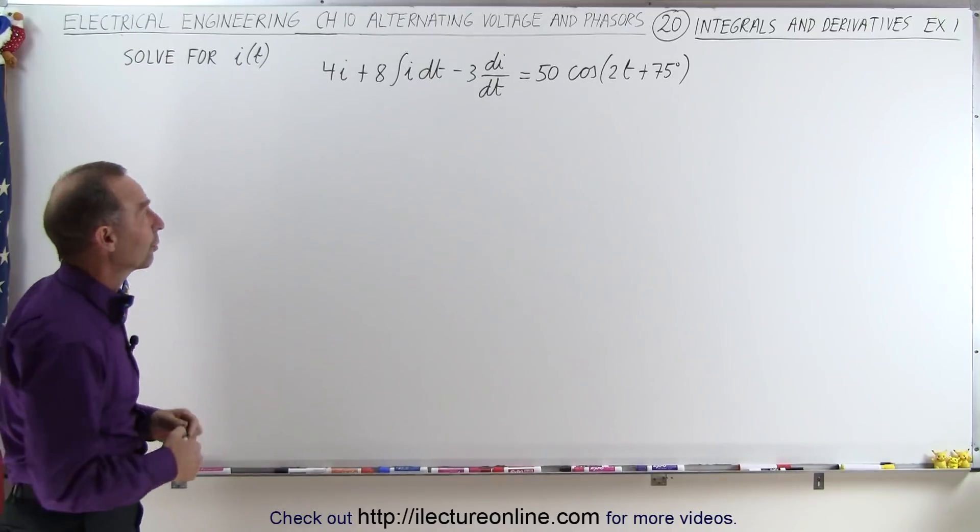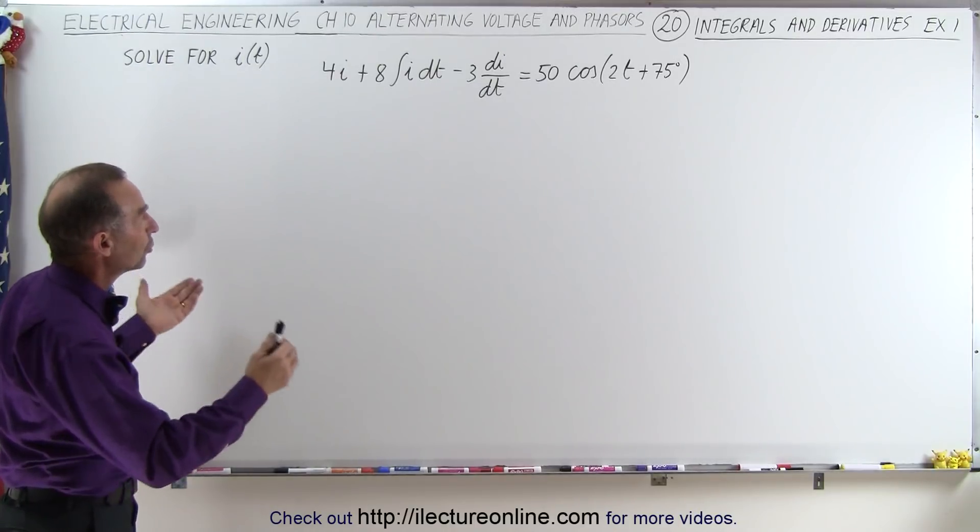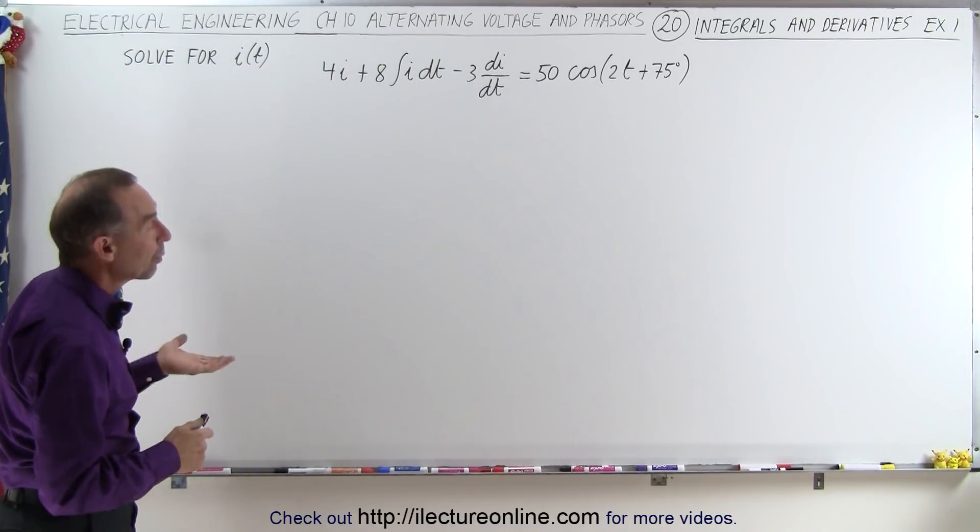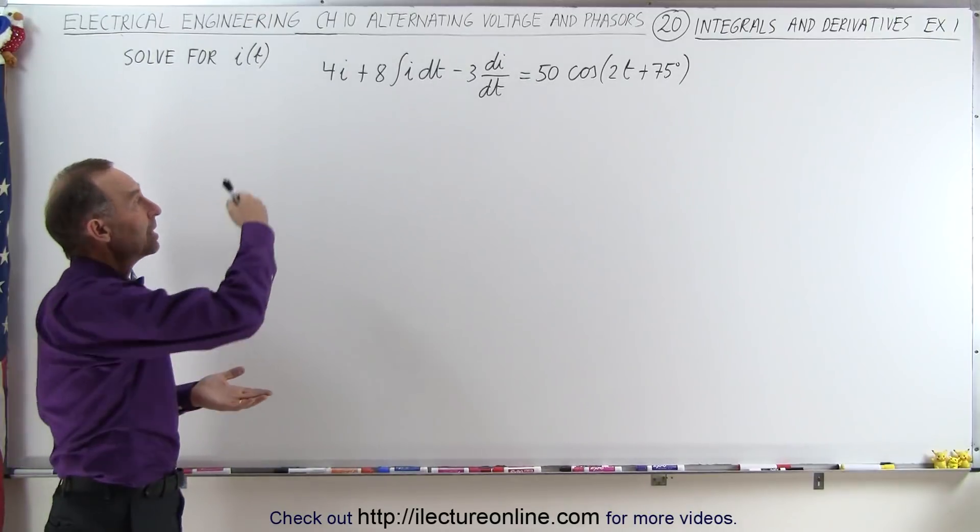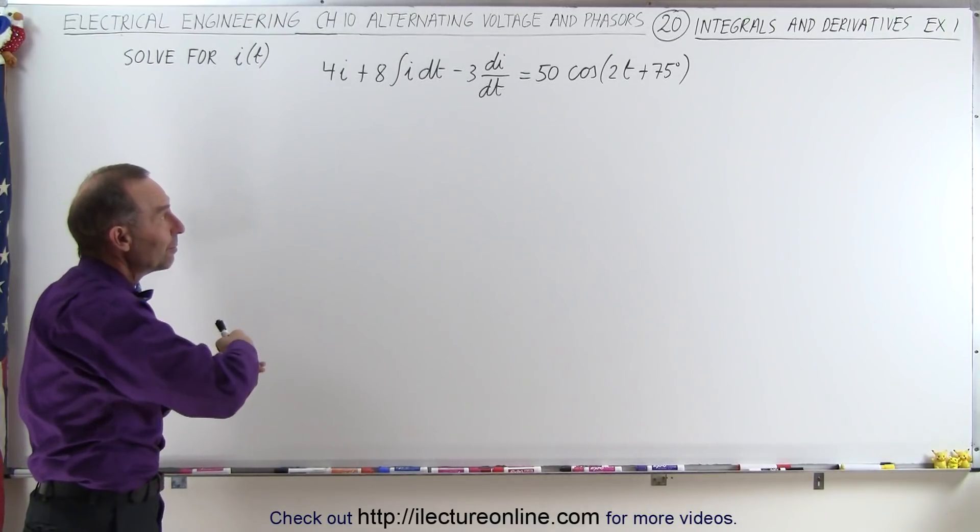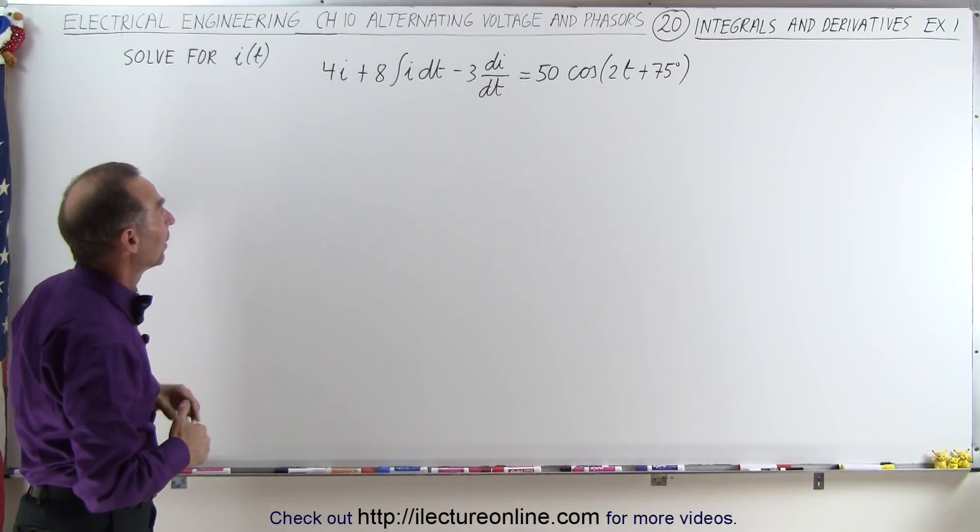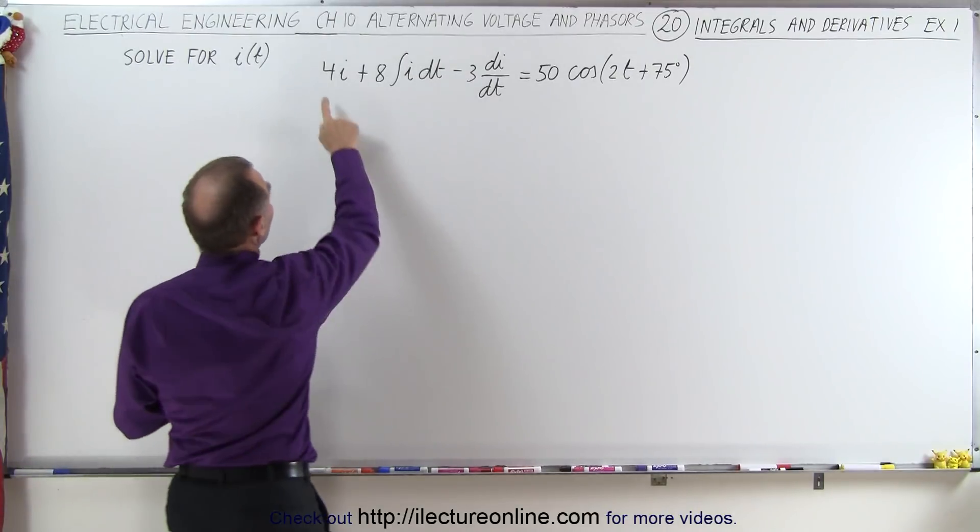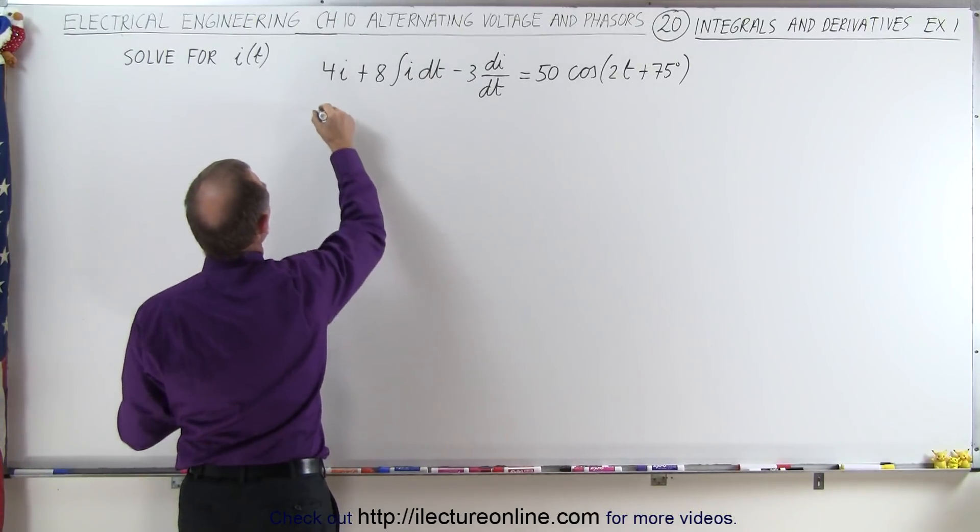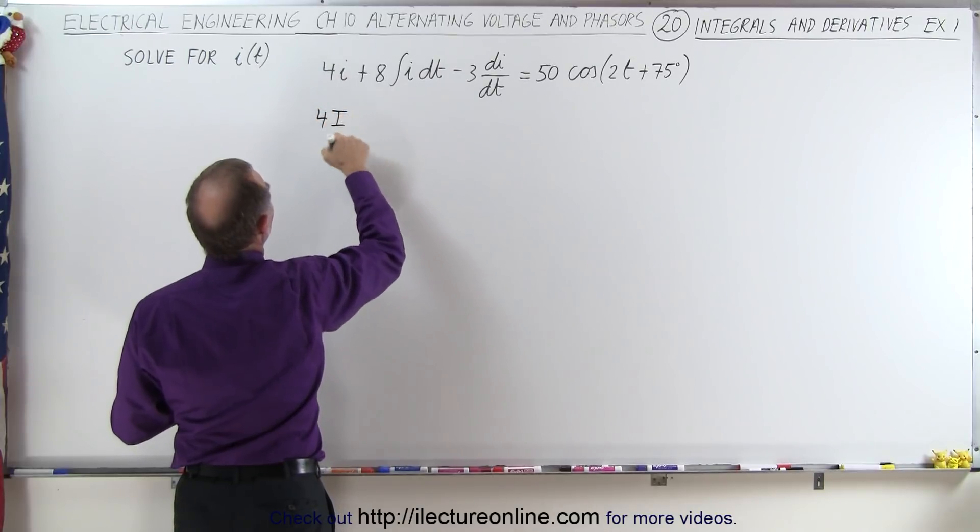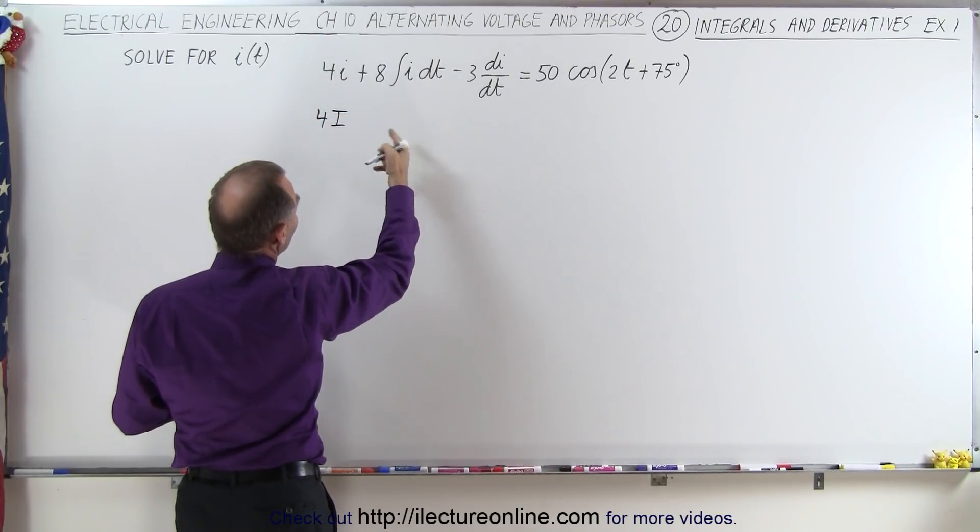So you can see this is a very realistic representation of what you might want to do with this kind of thing. And what we want to do here is we want to convert the equation from the time domain to the phasor domain or to the frequency domain. So what that then looks like is that 4i then becomes 4 times the magnitude of i in the phasor domain,